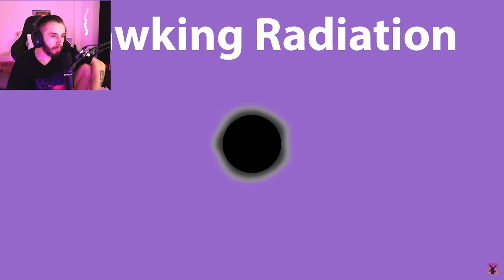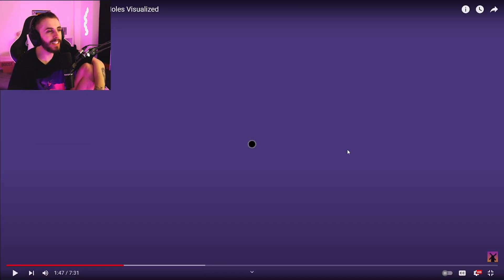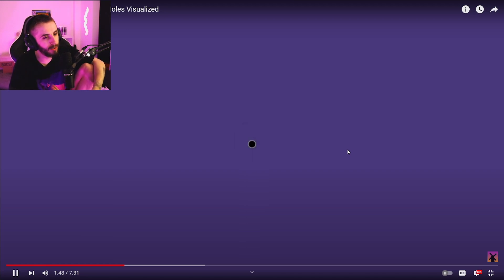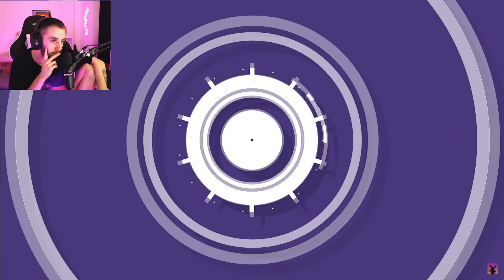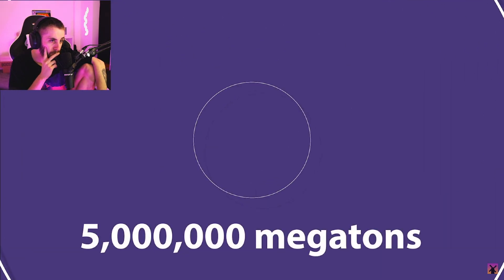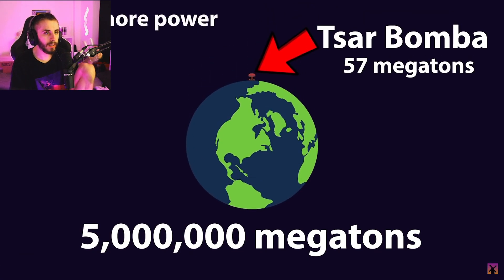Such a tiny black hole would not last long at all, because of the effect of Hawking radiation, which would completely evaporate the entire mass of the object in just one second. Imagine getting the science and equipment to do that — you form a black hole and it's just gone in a millisecond. The entire mass of the tiny black hole would be converted into an insanely high amount of energy equal to five million megatons of TNT.